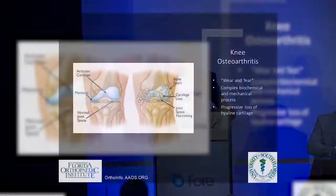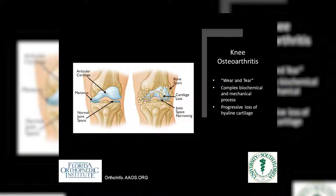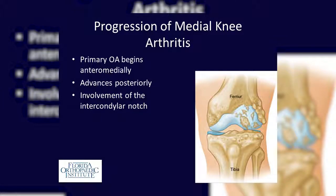Knee arthritis or osteoarthritis is that wear-and-tear type of arthritis of the knee joint. It's a rather complex biochemical and mechanical process in which you get degradation of the hyaline cartilage throughout the knee. I'll talk mostly about a varus knee for simplicity. In the varus knee, this will typically begin anteromedially and progress posteriorly with time, until you get involvement of the intercondylar notch and development of notch osteophytes.